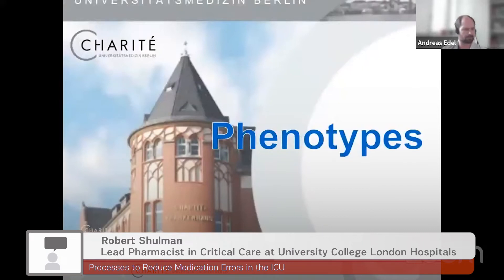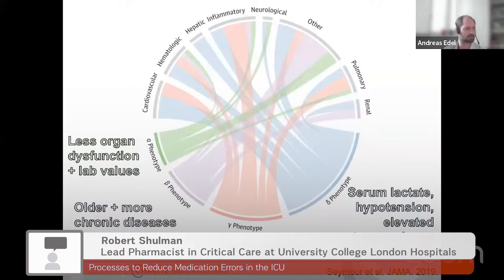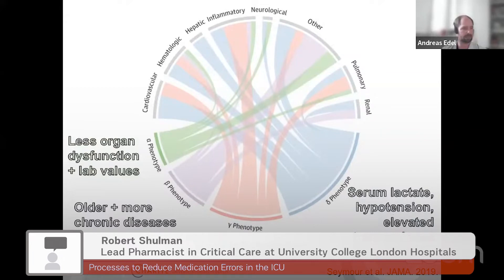They found that four phenotypes fit the best models, and we actually see all four of these in our ICU. There is an alpha phenotype — patients with less organ dysfunction and lab values less severely deviated from normal. Then a phenotype of older patients with more chronic diseases, a phenotype with more inflammation markers, and finally a large delta phenotype with increased serum lactate levels, hypotension, and elevated transaminases — the most severe form of sepsis and the biggest group in the study.